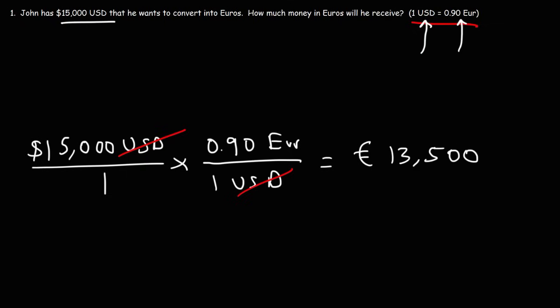That's how you convert from US dollars into euros. Keep in mind, the currency exchange rate changes every day. Tomorrow that rate might be slightly different. So if you go to convert US dollars into euros, you need to find out what the exchange rate is for that current day.